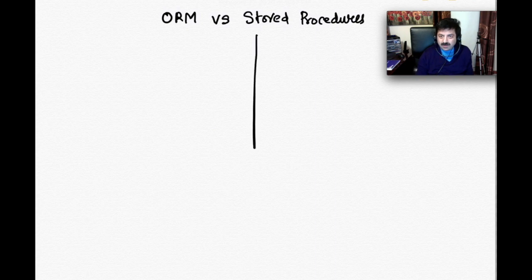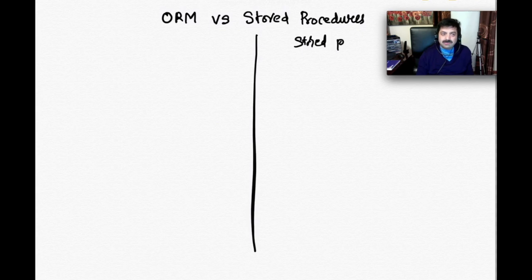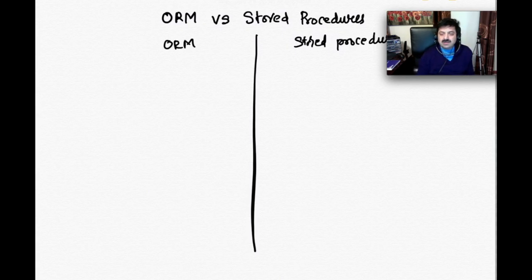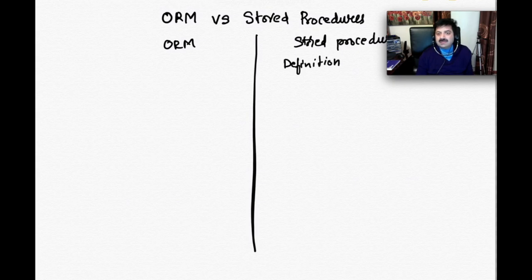Stored Procedures are pre-compiled SQL statements. When we create a Stored Procedure, it is stored in the database and the execution path is already decided — they are pre-compiled. Because of this, these statements are very fast, so the first big benefit of using Stored Procedures is performance.